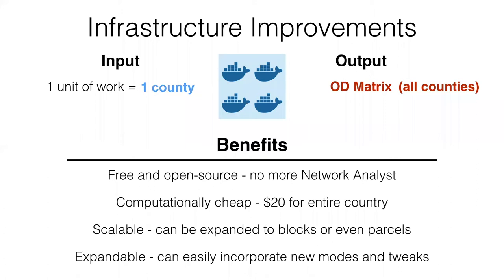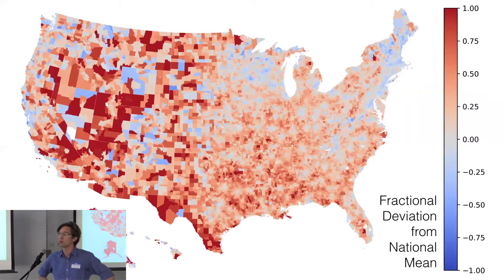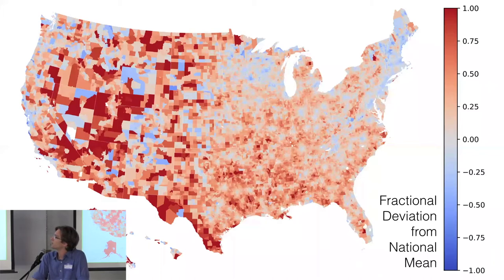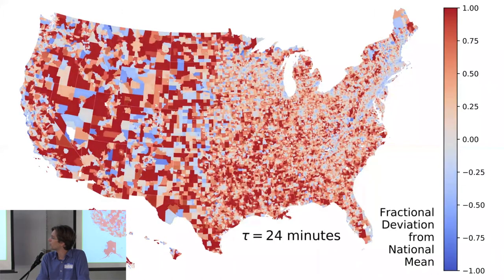With all of this in hand, these are the access costs for the country — showing fractional deviation from the national mean, with high costs or poor accessibility in red and low costs in blue. There's huge heterogeneity in rural areas: New Hampshire and Vermont are fine, Montana is worse off but doing well given low population density; Utah and southern Texas are a little worse. This uses a tau value of 60 minutes.